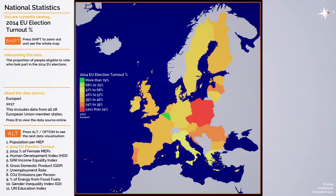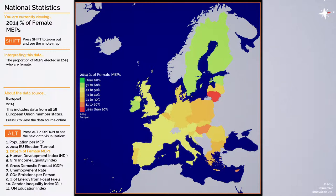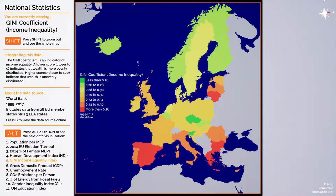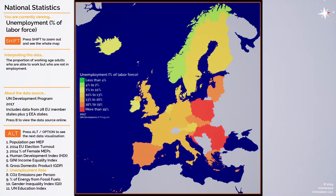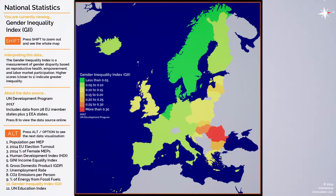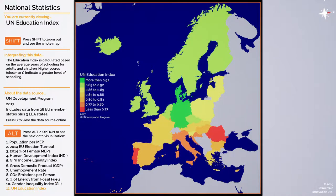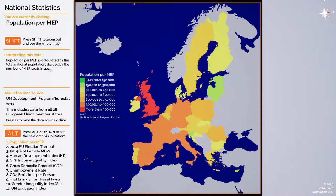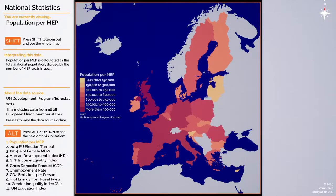Cycling through the statistics you can see the 2014 election turnout, percentage of female MEPs, Human Development Index, Gini Income Equality Index, GDP, unemployment rate, CO2 emissions, fossil fuels, Gender Inequality Index, and the UN Education Index. If I press the tab key I can also change the style of the visualization — the default is green to red, but we can also use shades of green, flesh tones from yellows to pinks, shades of red, and an orange-to-red heat map. So there are various different ways of visualizing the data as well as accessing different data sources.